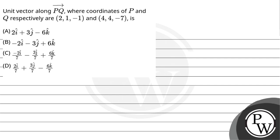Let's read the question: unit vector along PQ where coordinates of P and Q respectively are (2, 1, -1) and (4, 4, -7). Here our key concept is: the unit vector along a vector is given by the vector divided by its magnitude.